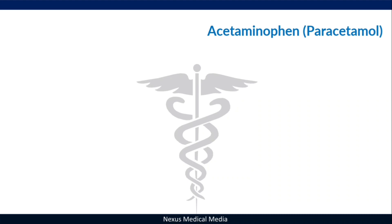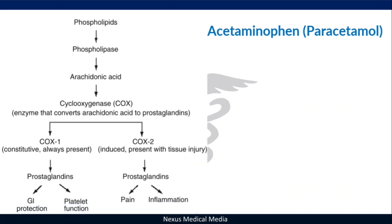Before we talk more about this drug, let's review a basic pathway of arachidonic acid. In the cell membrane you find phospholipids, and these phospholipids are cleaved by an enzyme called phospholipase A to form arachidonic acid. Arachidonic acid is then cleaved by the cyclooxygenase enzyme, or COX, which converts it to prostaglandins.